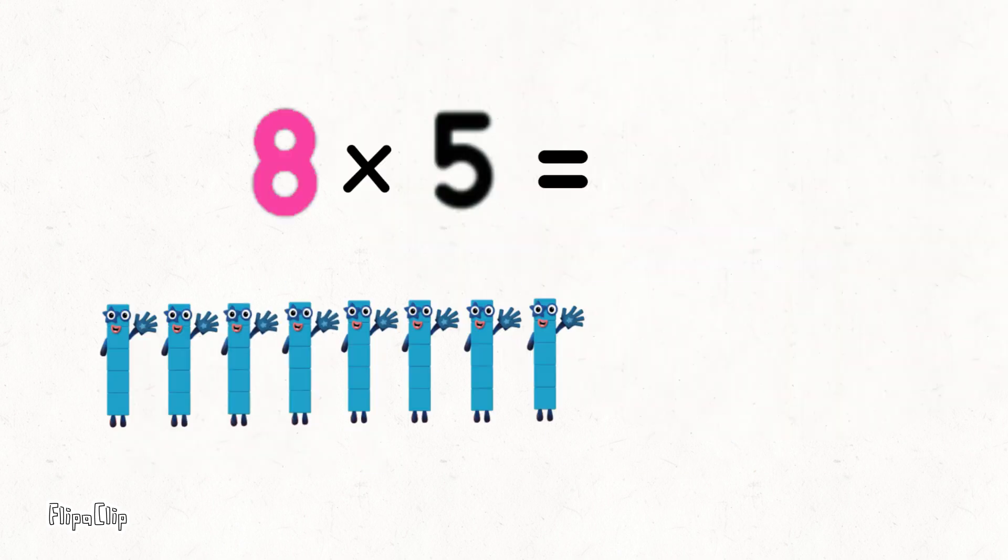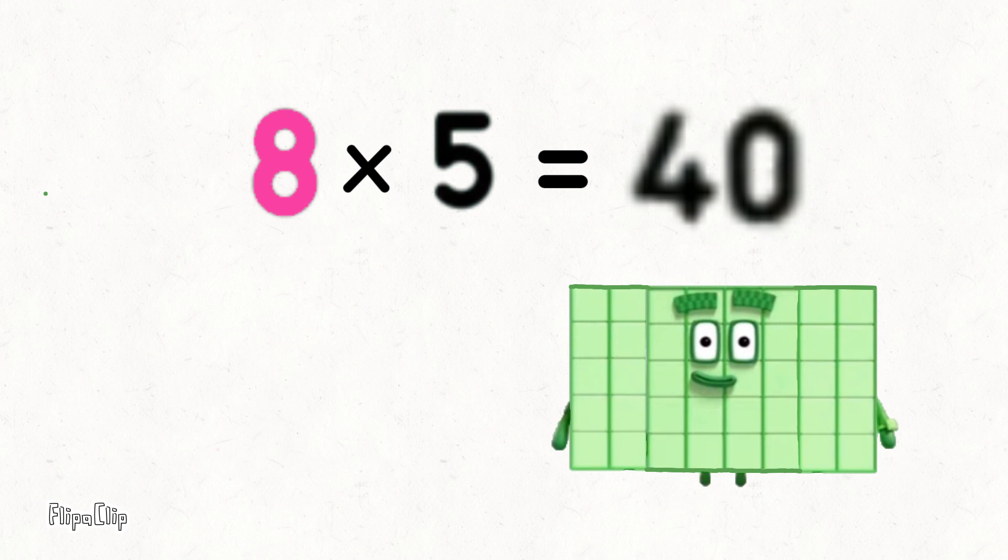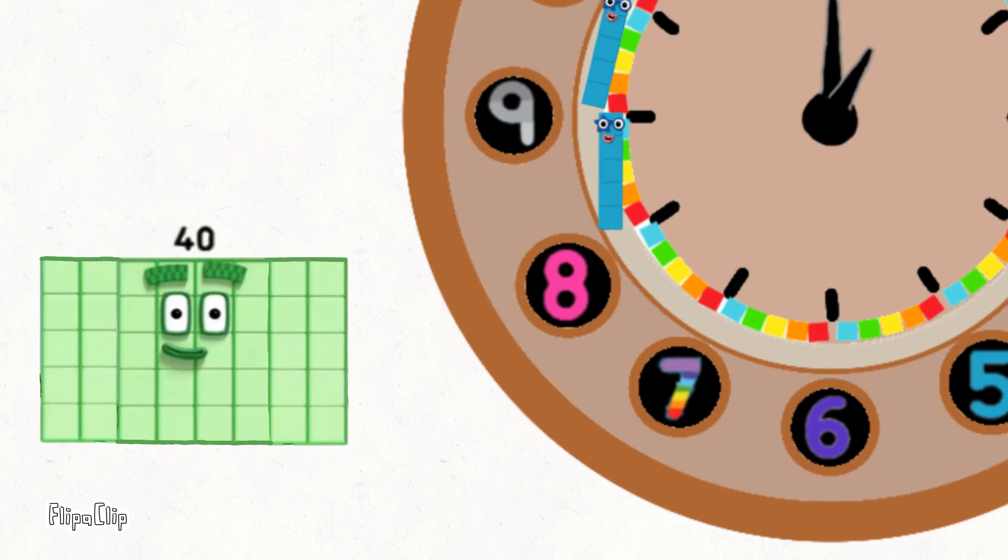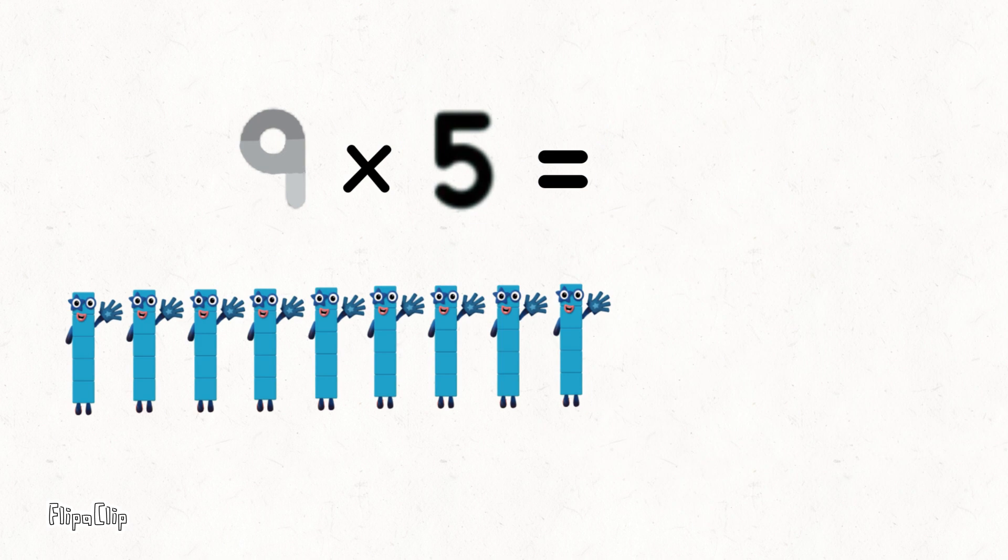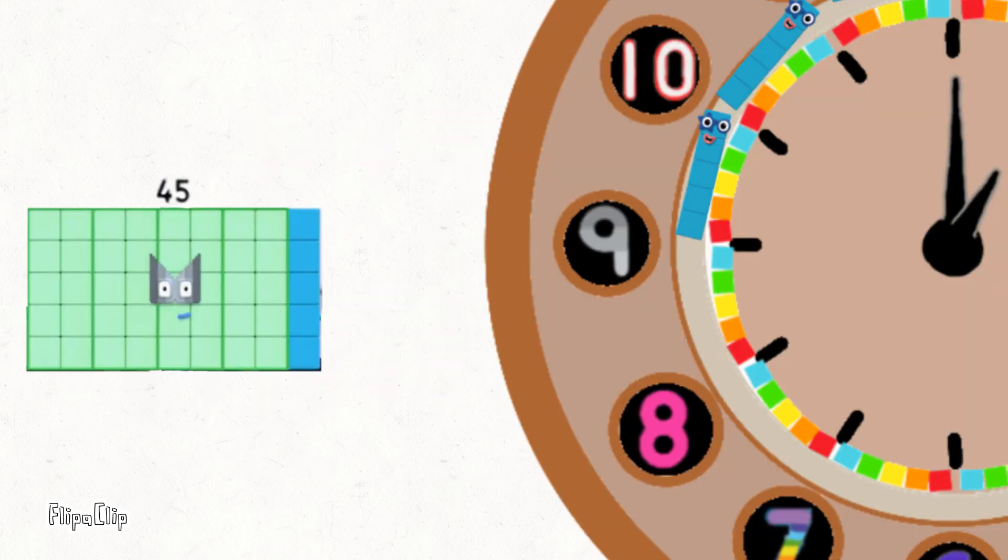Eight lots of five are forty. Keep on and keep going, there's no time for slowing. Nine lots of five, forty-five. Five at a time, how these numbers are growing.